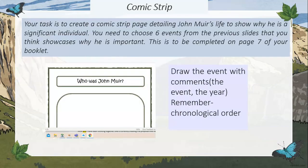Comic strip task: your task is to create a comic strip page detailing John Muir's life to show why he is a significant individual. Choose six events from the previous slides — you can rewind the video — that you think showcase why he's important. This is to be completed on page 7 of your booklet. You can draw the event with comments, the event, and the year. Remember to do it in chronological order, from the earliest part through to the later part. If you just want to write it, that's fine too, but we'd love to see some drawings.